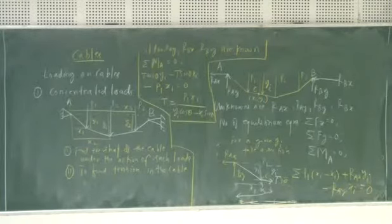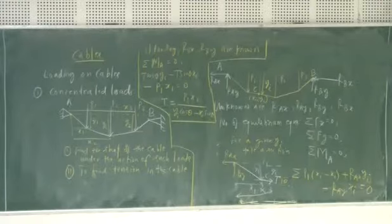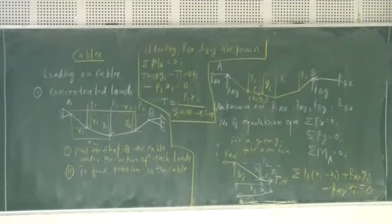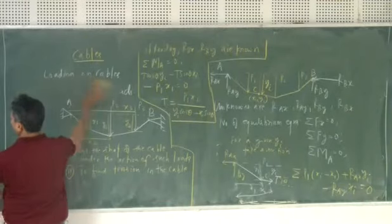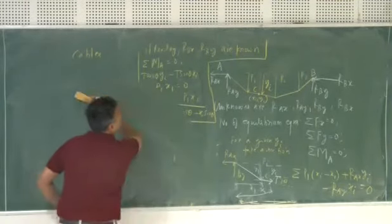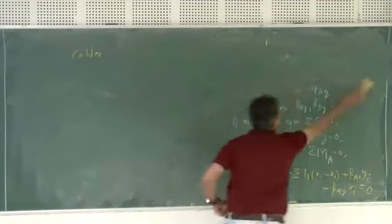Now, we will talk about the forces in the cable when it is subjected to the uniformly distributed load. Under the uniformly distributed load conditions, there are two types of variation. First one is the distributed load may vary along x direction or it may also vary along the length.